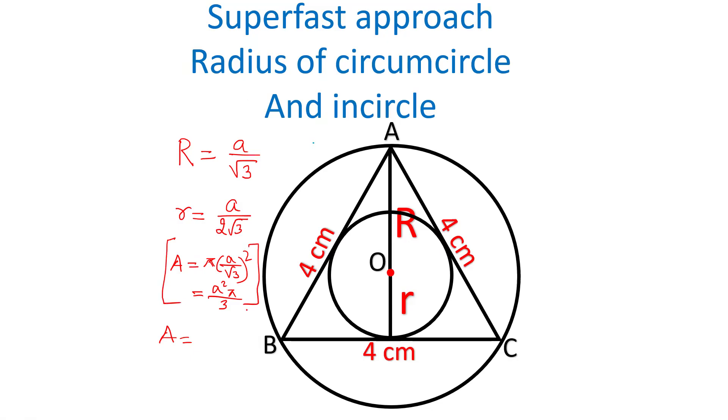The area of incircle will be pi r, which is a by 2 root 3 squared, which will become pi a square. The square of 2 root 3 is 4, times 3 is 12. So, pi a square by 3 and pi a square by 12 are the areas of circumcircle and incircle.